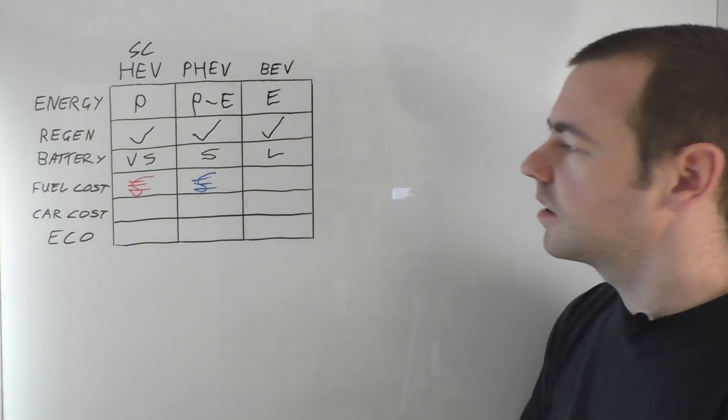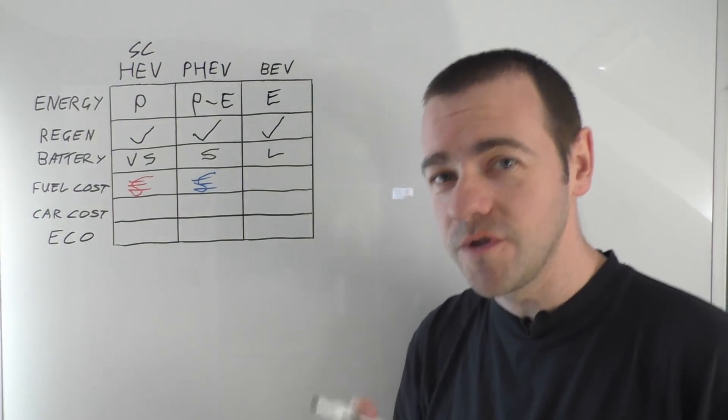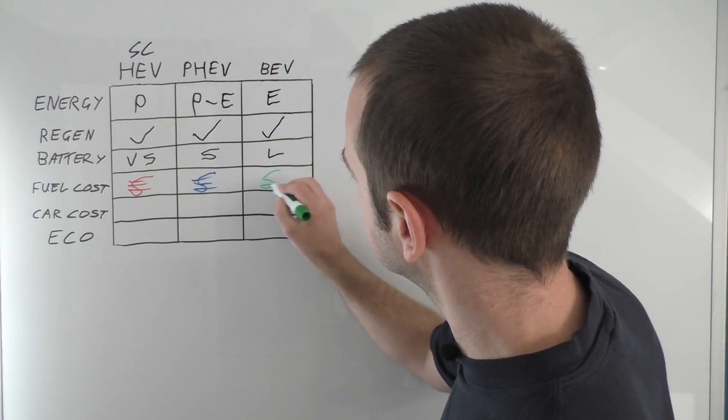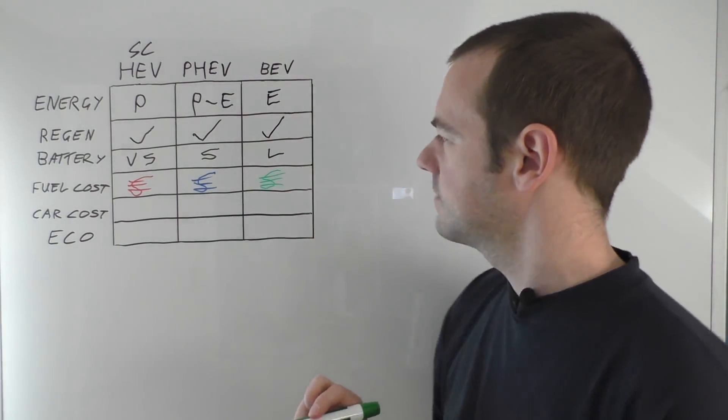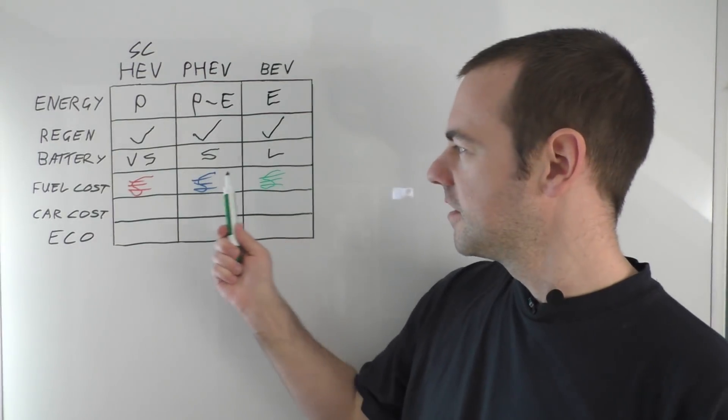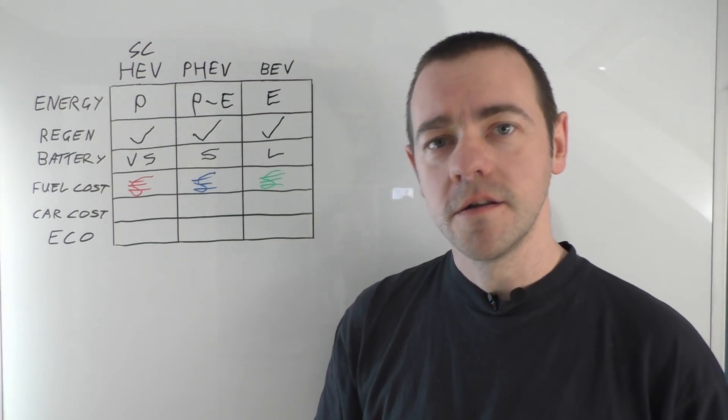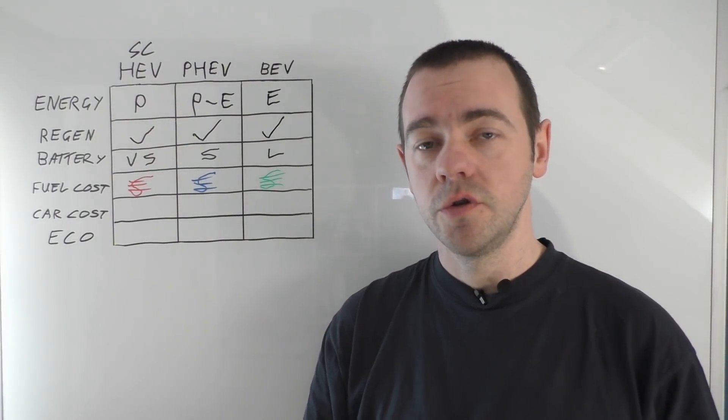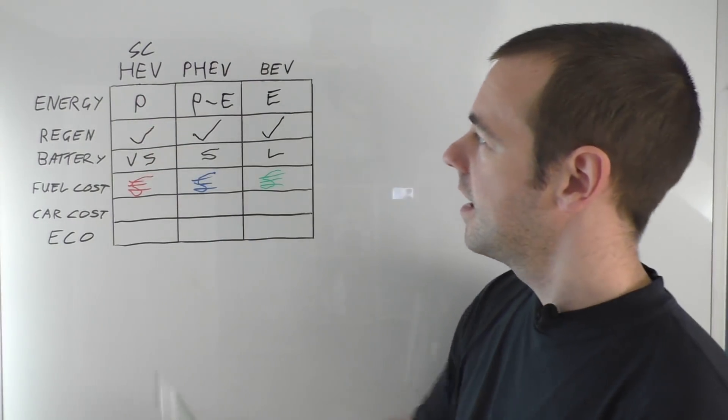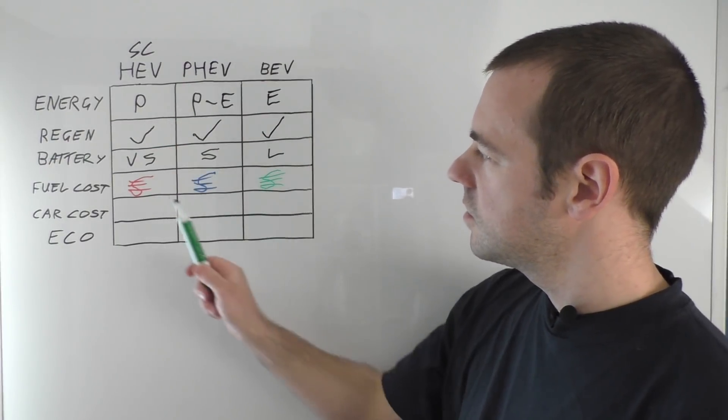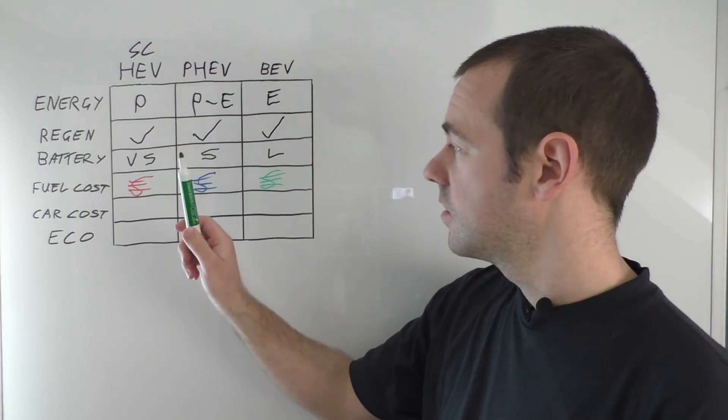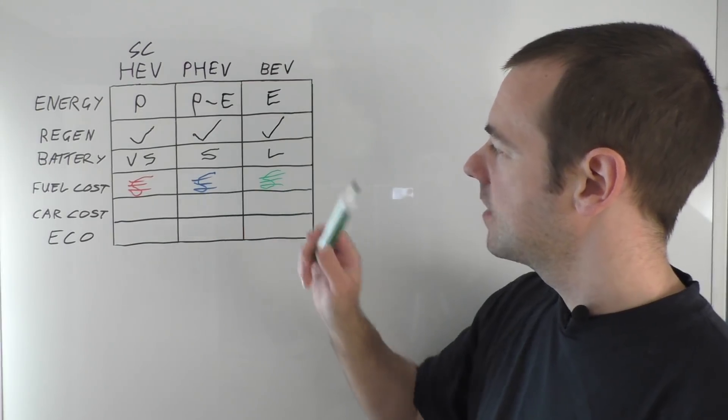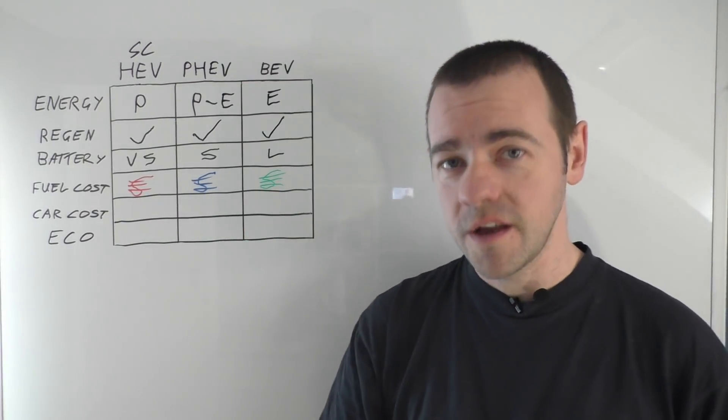So it's kind of in the middle in terms of fuel costs, better than self-charging hybrid certainly. Now when it comes to the battery electric vehicle, again in just terms of fuel costs alone we have a green one because that's good isn't it. And that's better. So green good, blue middle, red not so good. So don't get me wrong, a self-charging hybrid is more efficient than just a normal petrol engine car, but compared to these two that will be the most expensive to run followed by the plug-in hybrid followed by the battery electric vehicle.